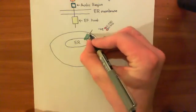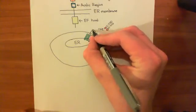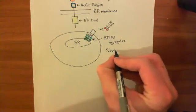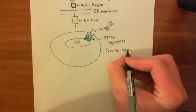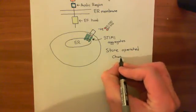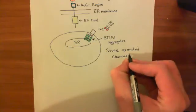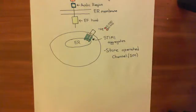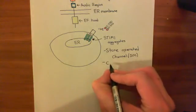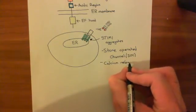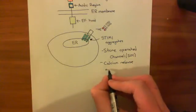This channel has many different names. It is called the store-operated channel, and for many years we knew this channel must exist but didn't know what it actually was, so we simply called it the store-operated channel, or SOC. Another name used is the calcium-release-activated calcium channel — this is another name for the channel that the STIM1 protein is going to open.